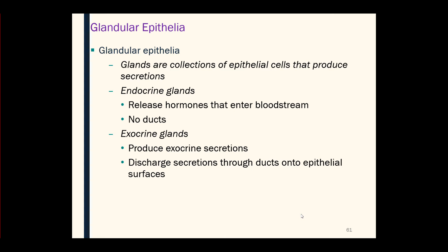We can classify epithelial glands into two types. We have endocrine glands, which are not going to be the focus of this course — those are covered more in Anatomy and Physiology 2. Endocrine glands produce hormones, which are released into the bloodstream. That's how the hormone gets distributed throughout the body, and in the endocrine gland there is no ductwork to move the secretion or hormone.